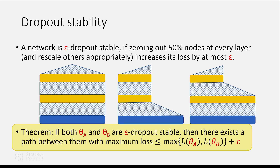Our main theorem: if both sets of parameters are epsilon dropout stable, then we can show there exists a path between them. The maximum loss at any point on the path is upper bounded by the maximum loss of the two endpoints plus epsilon, where epsilon is from the dropout stability property.